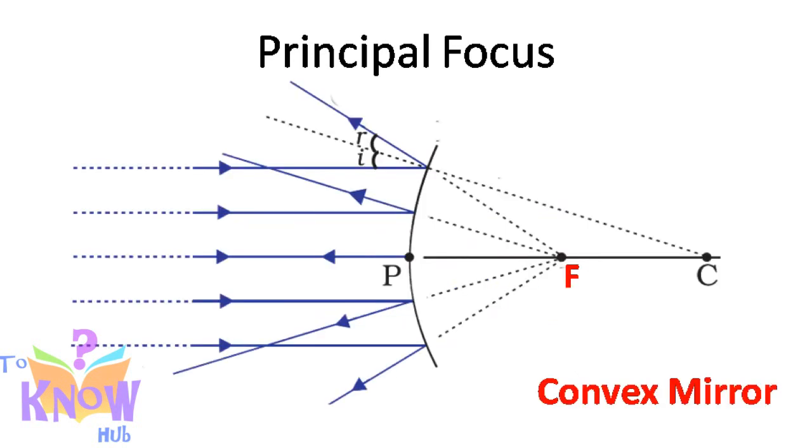When such parallel rays fall on convex mirror, they diverge. But if we extend them backward they meet at a virtual point. So it appears as if those rays are coming from that virtual point. That virtual point is the principal focus of that convex mirror.